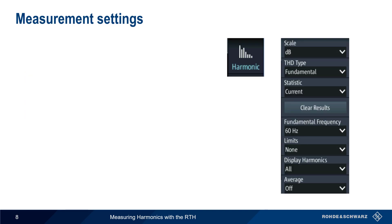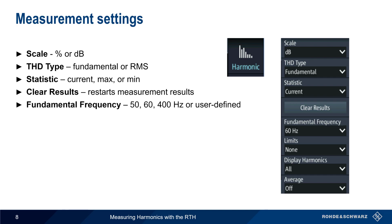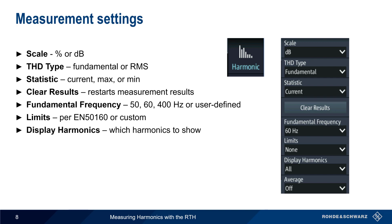There are a number of different measurement settings that are used when measuring harmonics. These include the measurement scale, the method used in computing total harmonic distortion, and the type of value shown — current, max, or min. The clear results button can be used to reset these statistics. Although the RTH can usually automatically determine the fundamental frequency, this can also be manually configured. Limit testing as per EN5160, or a user-defined set of values, is also supported. The number and type of harmonics to display is user configurable as well. Finally, results can be averaged to reduce the effects of random variation in the measurements.